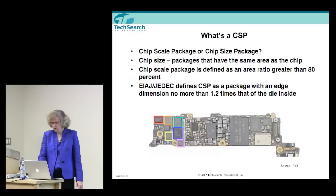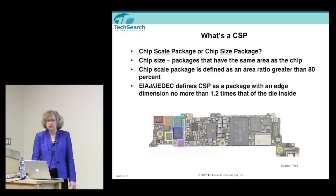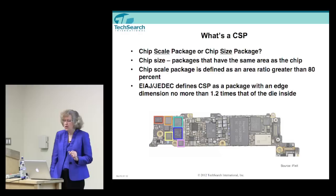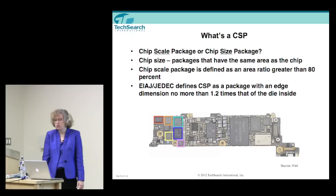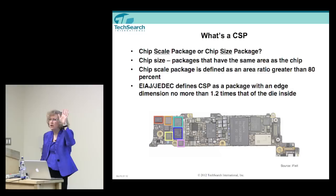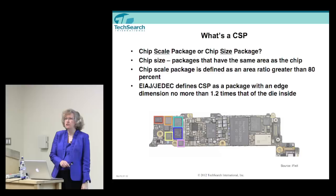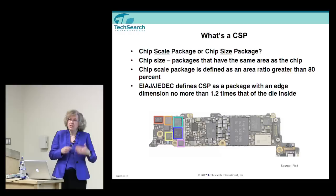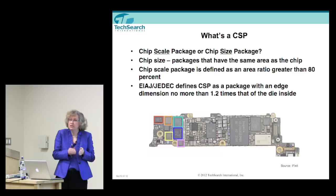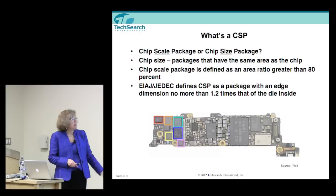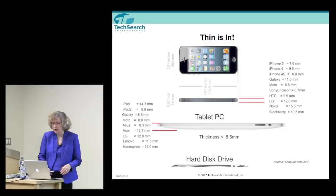A CSP — chip scale or chip size package — is the idea of shrinking one of these packages down. The official definition is a package with an edge dimension no more than 1.2 times that of the die inside, though it became a marketing term as well. If you ripped open a new iPhone 5 and looked at the board, you would find a lot of CSPs in it. The introduction of the chip scale package is really what enabled a lot of our portable products, because it allowed packaging the die in something almost the same size as the die itself and cramming it all on the board.